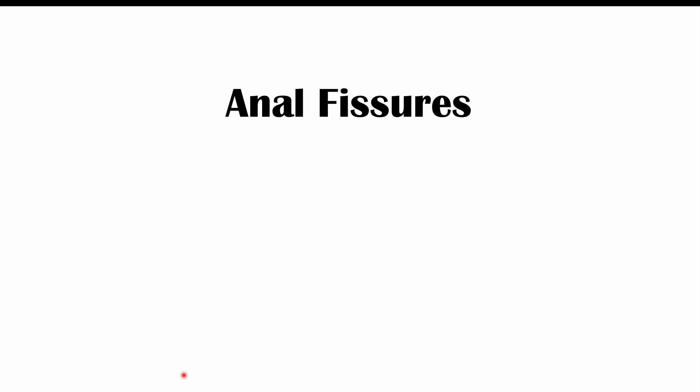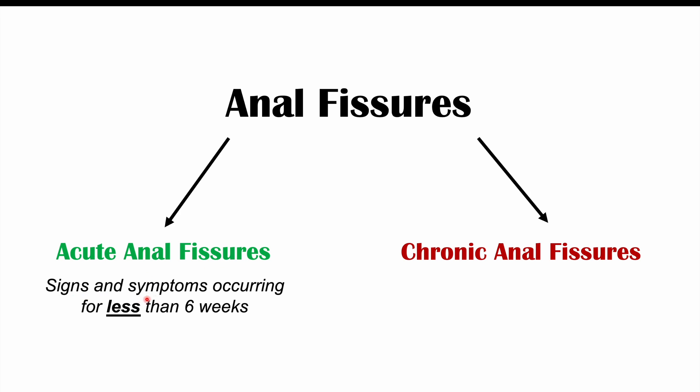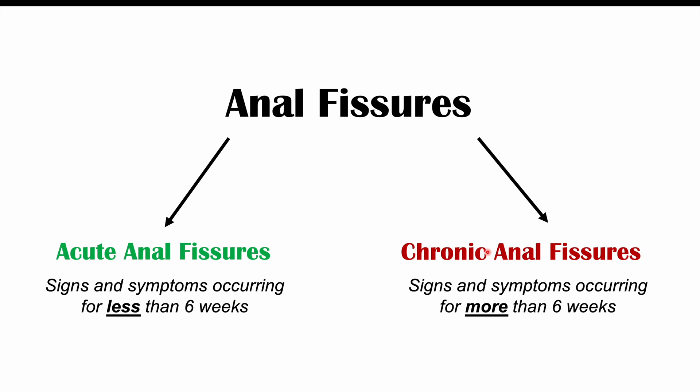Before we talk about signs and symptoms, we have to discuss two types of anal fissures: acute and chronic. The difference is how long patients have had the fissure and symptoms. Acute anal fissures have signs and symptoms lasting less than six weeks, while chronic anal fissures have signs and symptoms lasting more than six weeks. We distinguish these because different signs and symptoms occur in chronic versus acute fissures.